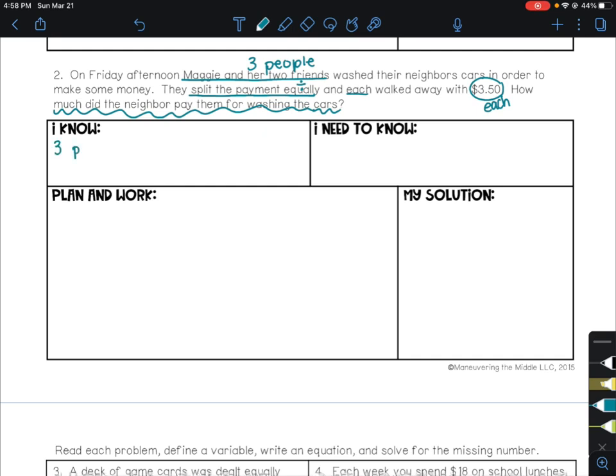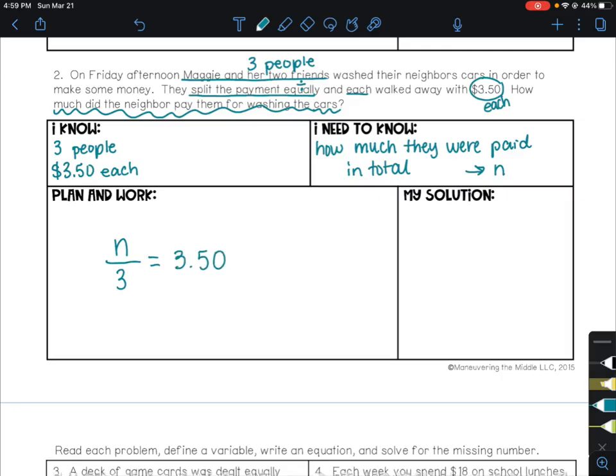So we know three people. We know $3.50 each. But what we don't know is how much they were paid in all, in total. So we can pick any letter we want. You could say N for neighbor. It really doesn't matter. M for money, if you want. So start with your variable, the total money that they got paid. The total money the neighbor gave them. Now, they were handed that money, and then they split it up, meaning divide. So I'm going to show that money being divided by how many people? Well, it was three of them. And when you take all that money and you divide it by the three people, you get $3.50, the amount that each person got.